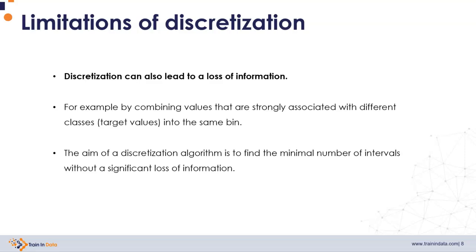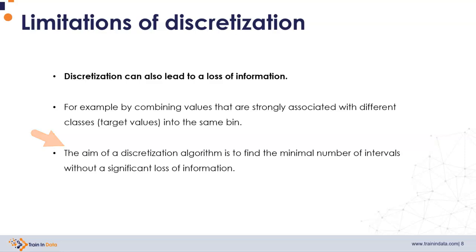But there is no free lunch in machine learning, so discretization also has some limitations. Discretization can lead to a loss of information, because we are summarizing all the values of the variable into a few discrete intervals. We could end up combining values that are strongly associated with different classes of the target into the same bin, losing the information those values provide. The aim of a discretization method is to find the minimal number of intervals without a significant loss of information.